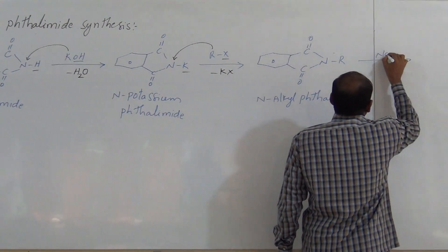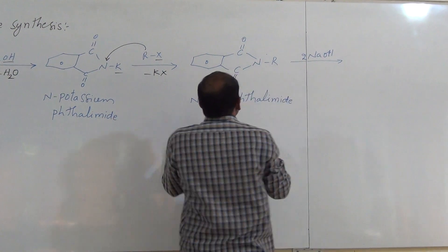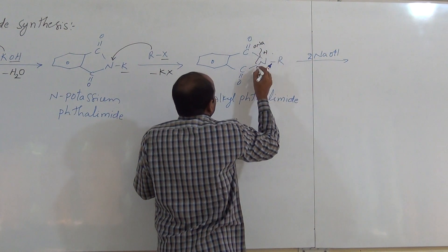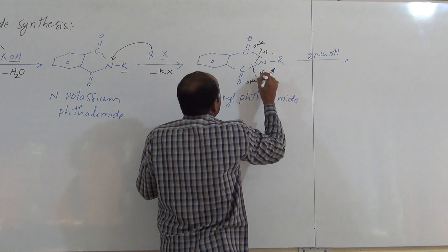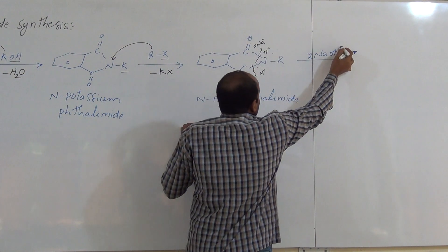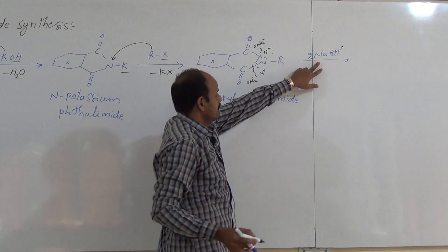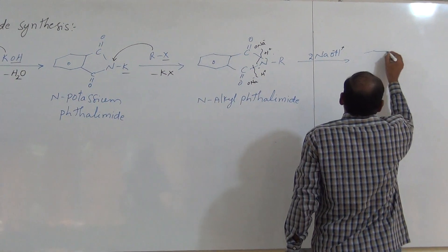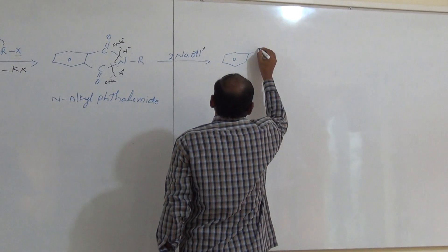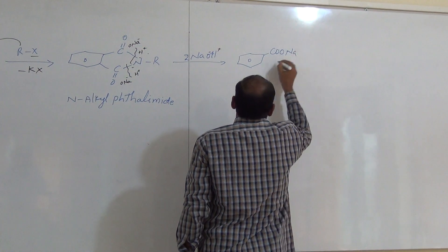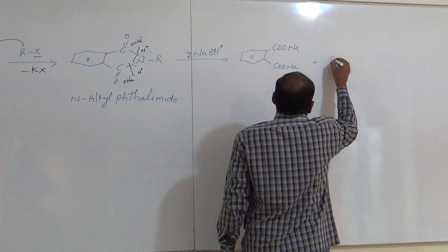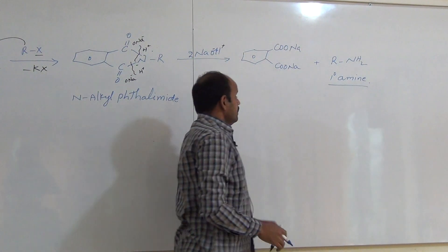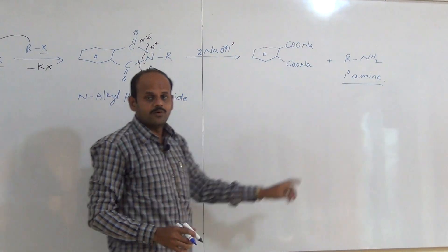N-alkyl phthalimide is reacted with sodium hydroxide (NaOH), where two moles are involved. After breaking the bond, we get ONa and H groups. Since NaOH dissociates into H+ and NaO-, these are produced. Thus we get R-NH2 — a primary amine — which is our major product.